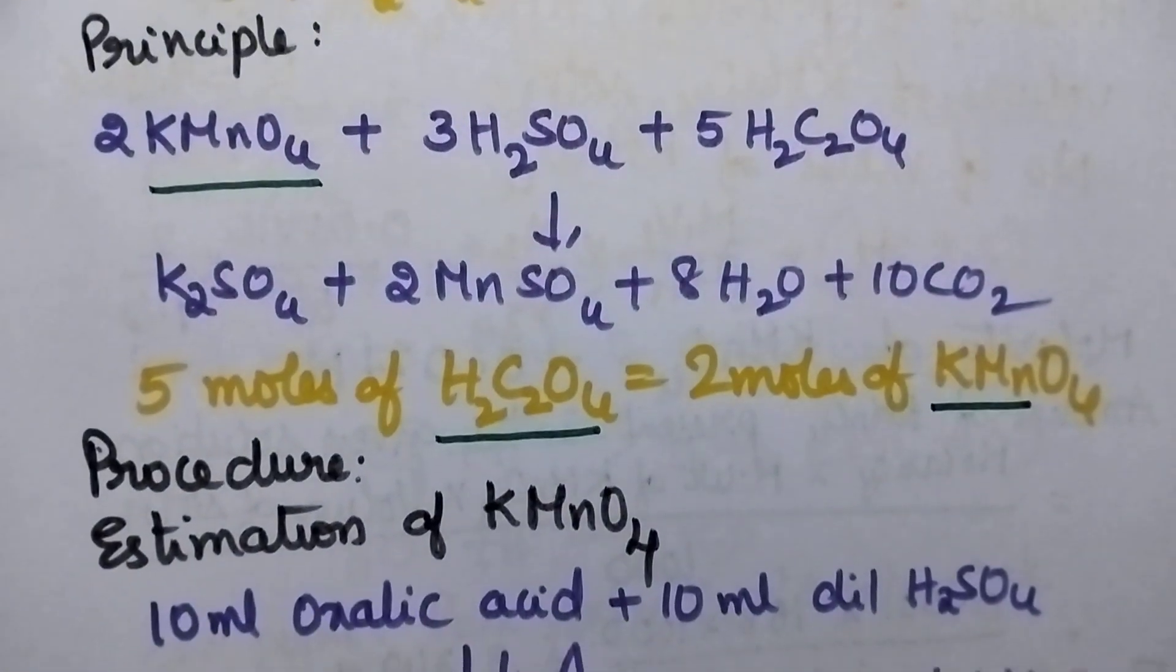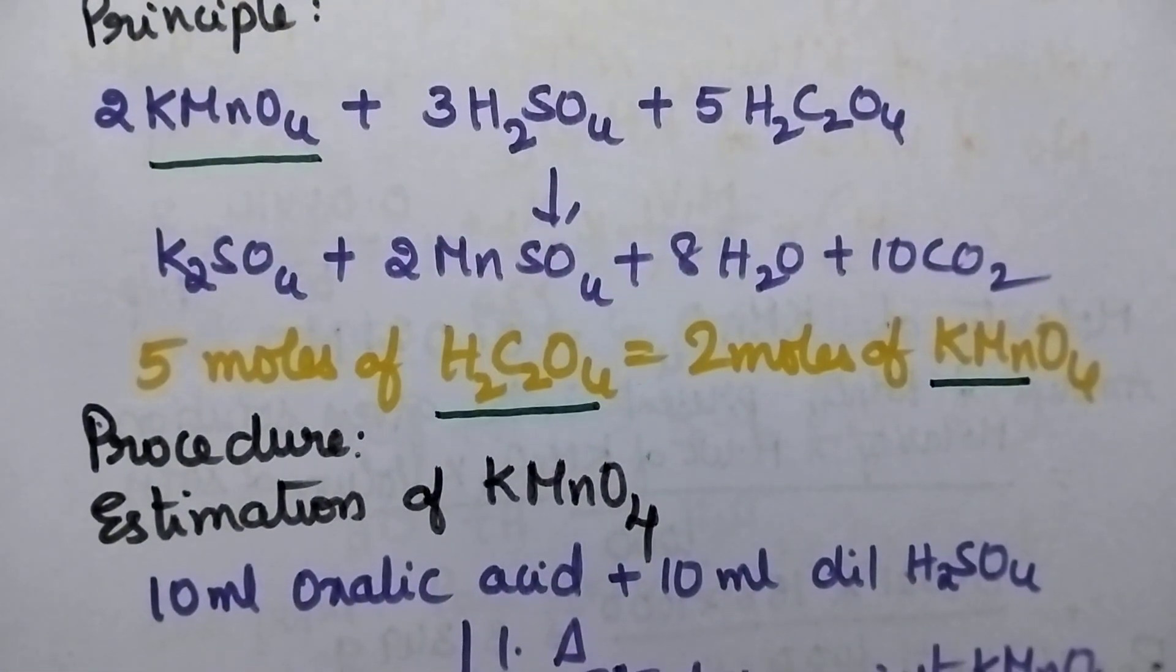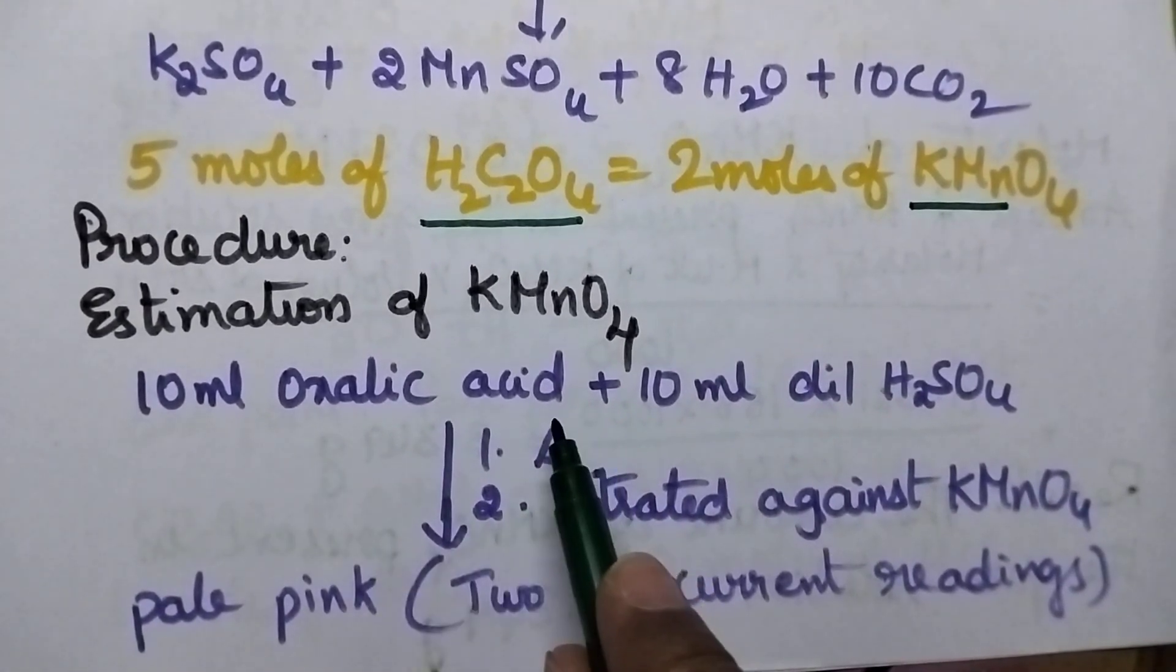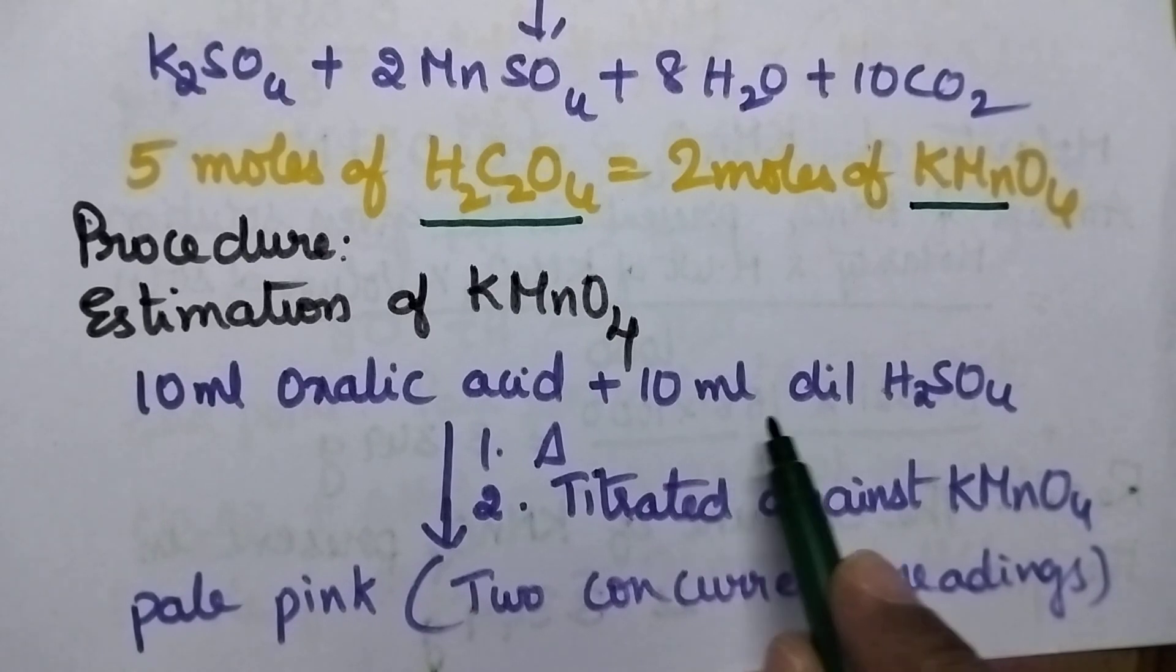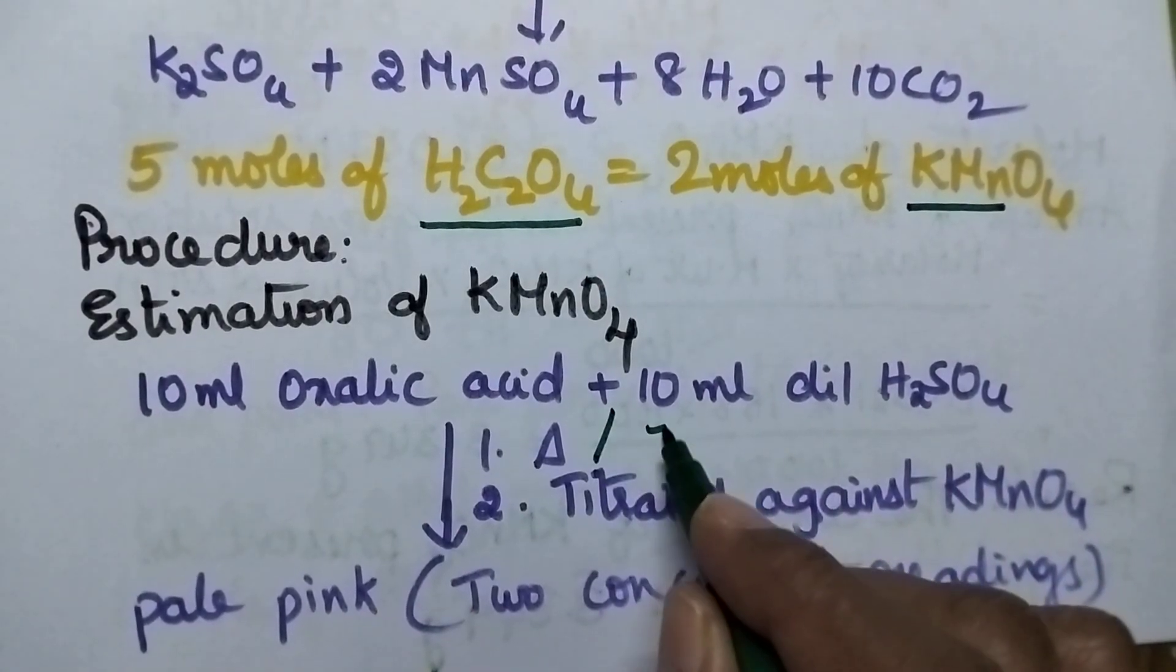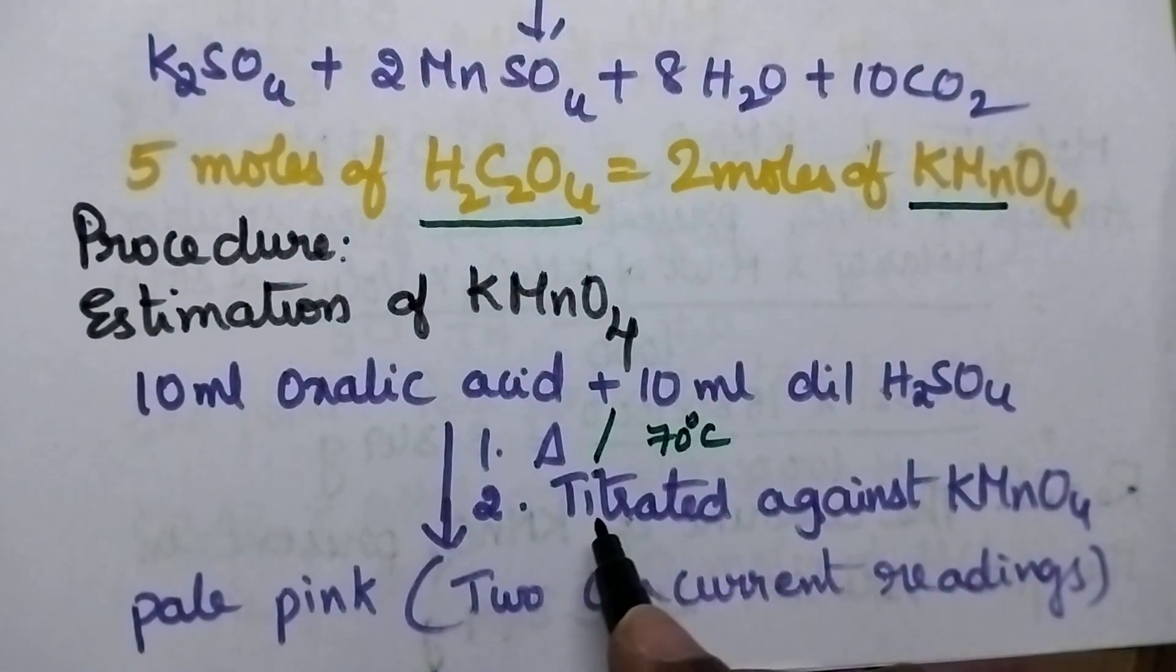Coming to the procedure, it involves the estimation of potassium permanganate. Initially 10 ml of oxalic acid is transferred into the conical flask. To that, 10 ml of dilute sulfuric acid is added and it is heated until 70 degrees centigrade temperature is reached.